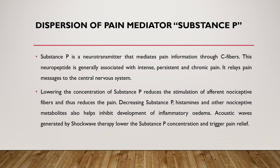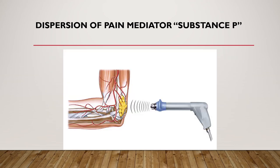Shockwave also works via dispersion of the pain mediator substance P. Substance P is a neuropeptide that mediates pain information through C fibers — small fibers — and is generally associated with intense, persistent, and chronic pain; it relays pain messages to the central nervous system. Lowering the concentration of substance P produces stimulation of afferent sensory nociceptor fibers and thus reduces pain. Decreasing substance P, histamines, and other nociceptive metabolites also helps inhibit the development of inflammatory edema. Acoustic waves generated by shockwave therapy lower substance P concentration and trigger pain relief.